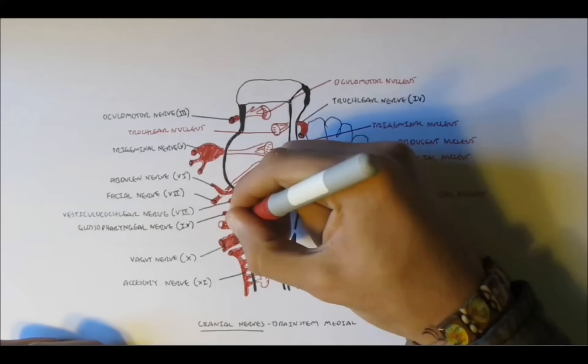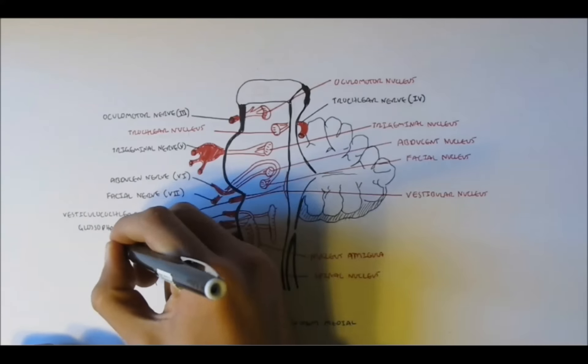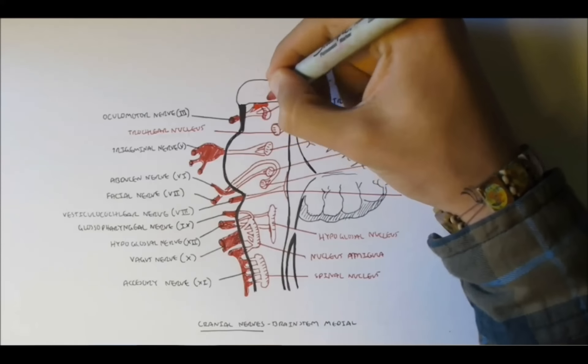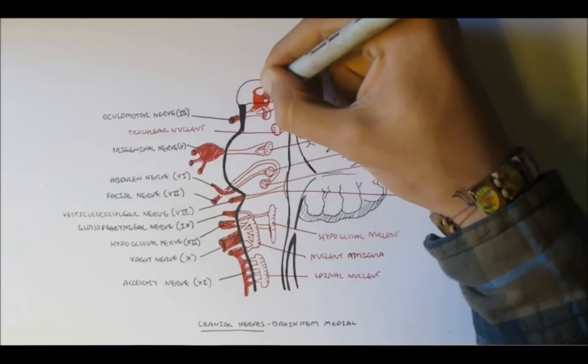And finally, nerve 12, the hypoglossal nerve. As you can see, it's situated just below, it protrudes out just below the glossopharyngeal nerve. So it's referred to as the hypoglossal nerve, nerve 12, and the hypoglossal nucleus.